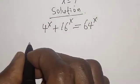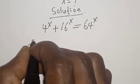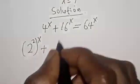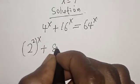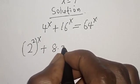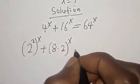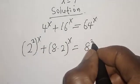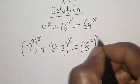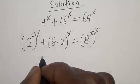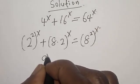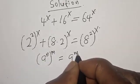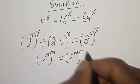4 raised to power s is 2 squared raised to power x, plus 16 is 8 multiplied by 2 raised to power x, is equal to 64 which is 8 squared raised to power x. Note that a raised to power n raised to power m is equal to a raised to power m raised to power n.